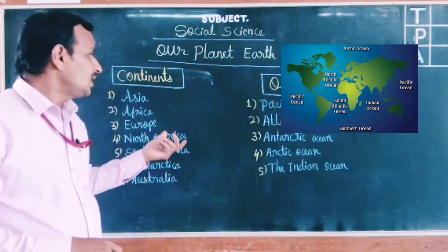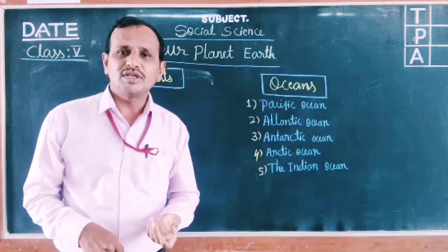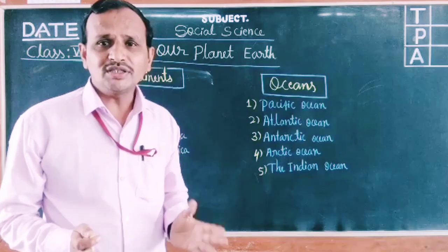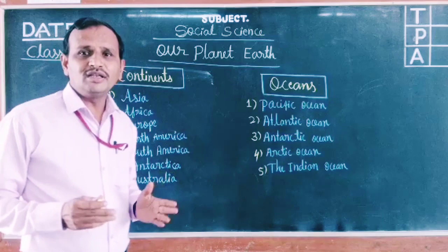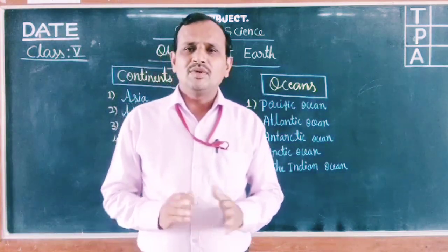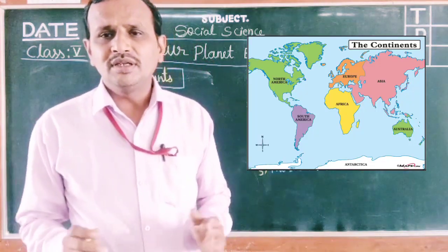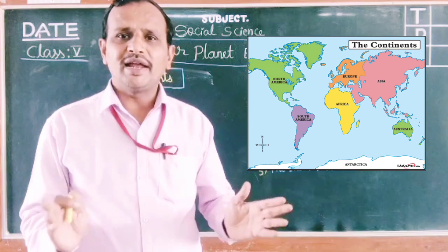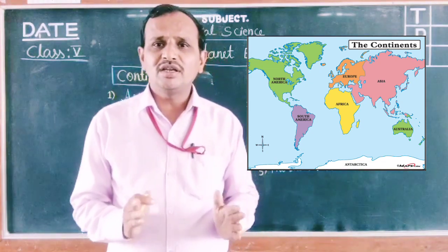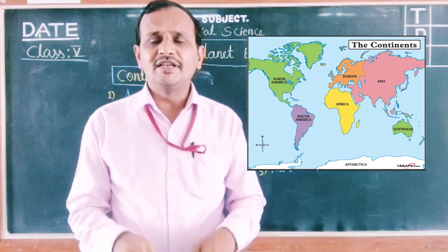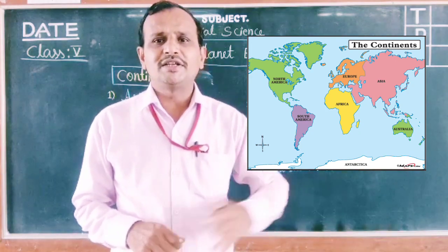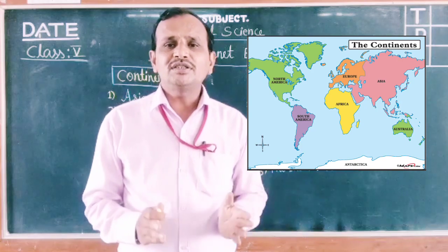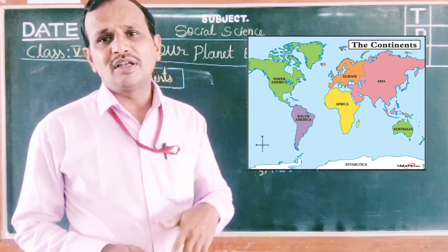So today's topics are continents and oceans. Let's begin to understand the first topic — continents. What is the meaning of continents? A continent is a large area of land which consists of several countries. That is the meaning and definition of a continent.